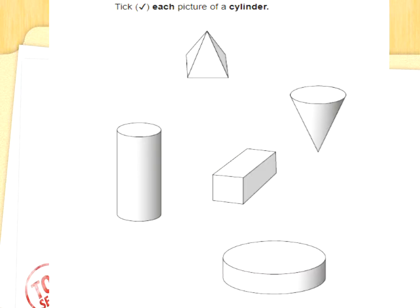Tick each picture of a cylinder. What do we know about cylinders? It's got two 2D faces and one curved face, and the cylinder has a circular face. There's the most obvious cylinder. Cylinders don't all have to be the same height. There's another one with a circular face but a point at the end — that is a cone, so it can't be that one. It can't be a cuboid. Can you spot another 3D shape that's got circular faces and a curved face? There it is — it's just been squished. Well done.